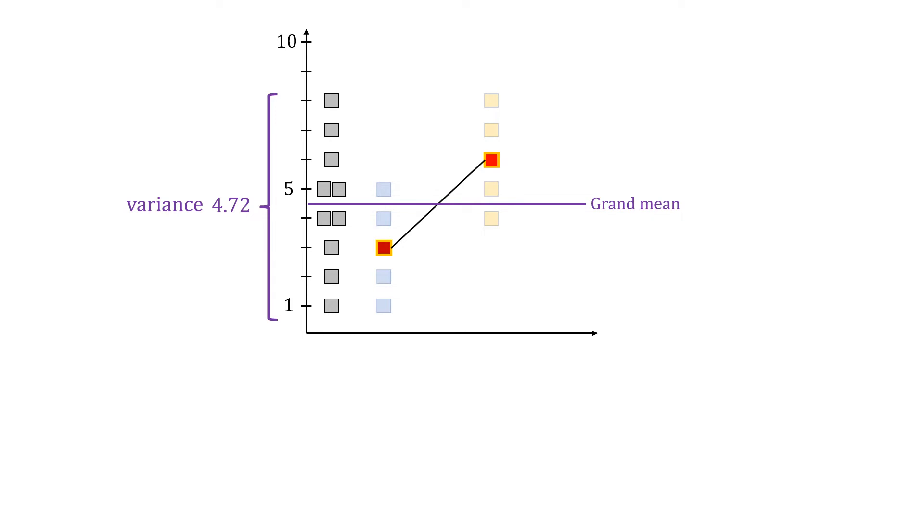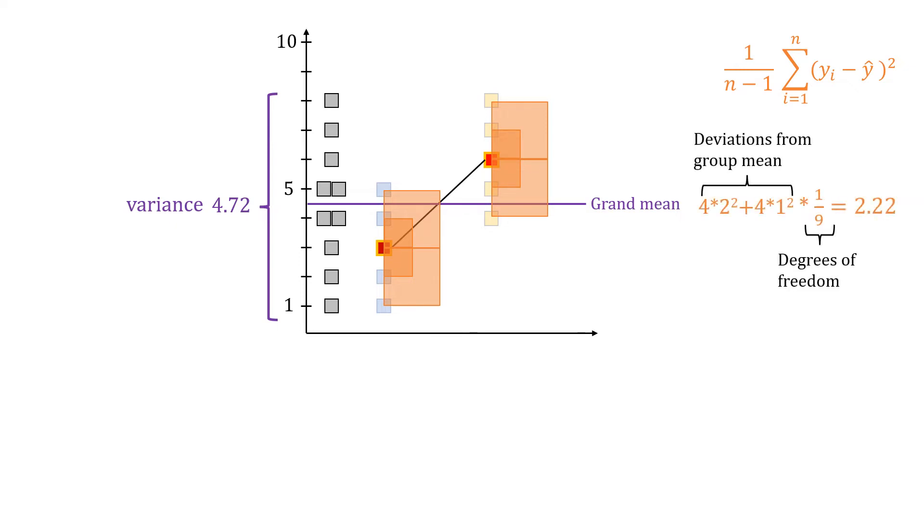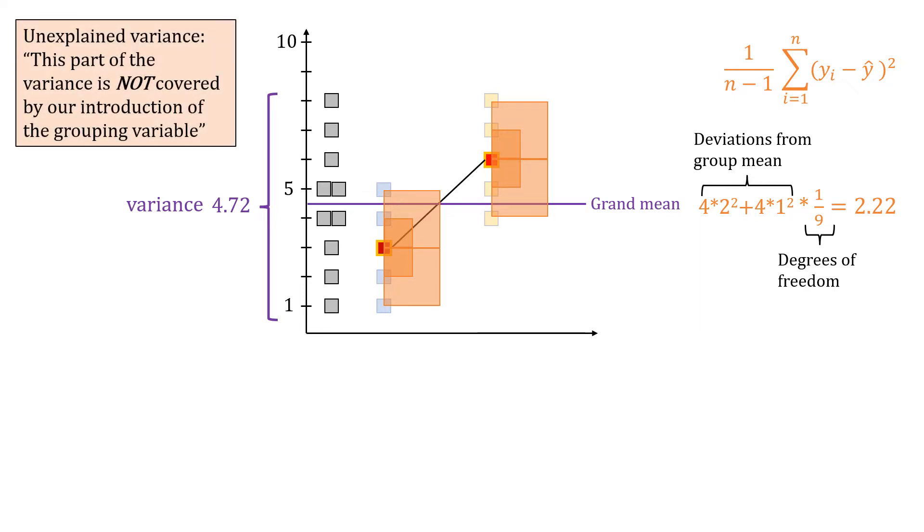Now you calculate another type of variance, and this time you use the original data points again. However, instead of the grand mean of the outcome variable, you subtract the mean values of either group, which is the prediction of the model. As usual, you square the differences, add them up, and divide by n minus 1. In this case, the squares are either 4 or 1 because the differences are 1 or 2 or the negatives of them. This is the unexplained variance because your model is blind for this part of the variation.